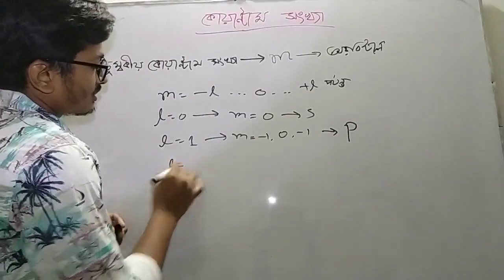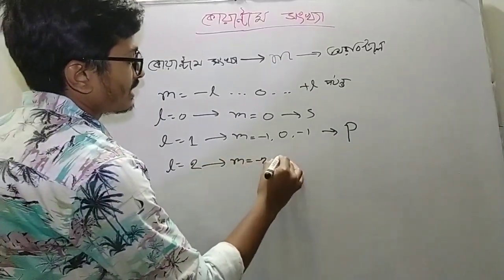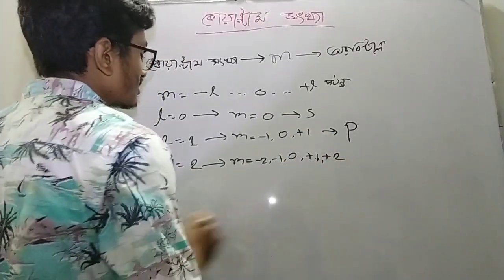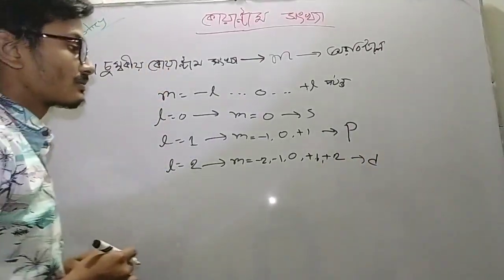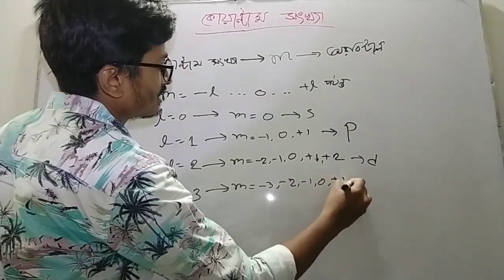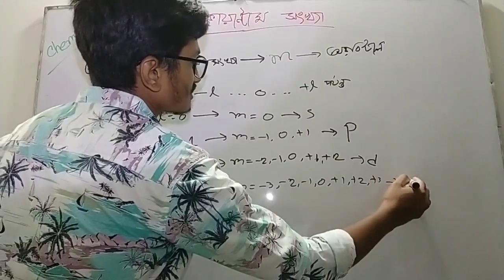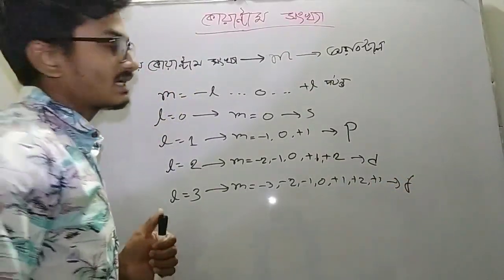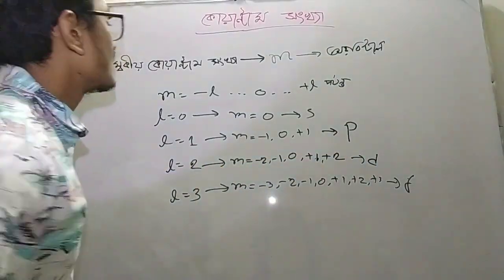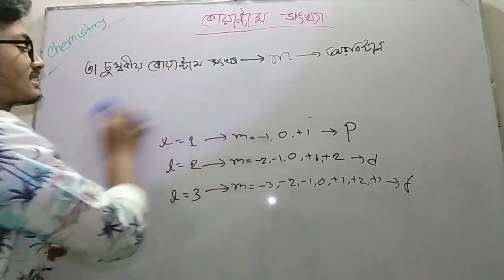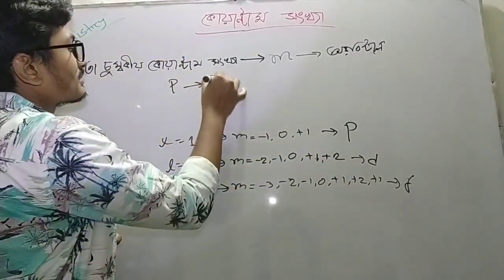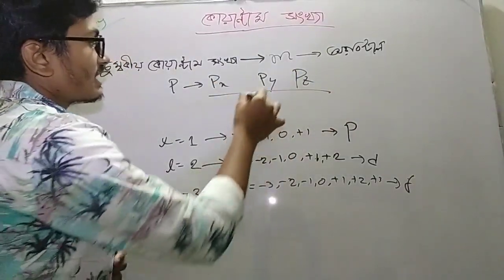Minus 2, minus 1, zero, plus 1, plus 2 — this describes the D orbital. For L, the range is minus 3, minus 2, minus 1, 0, plus 1, plus 2, plus 3 — this describes the F orbital. F plus 2.